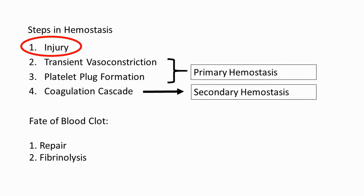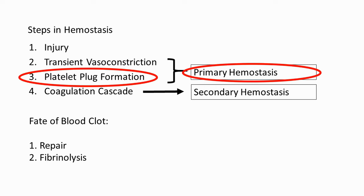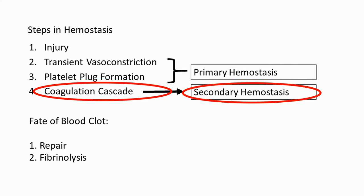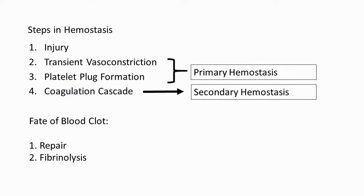It starts off with an injury to the blood vessel causing blood loss. A series of events then happen leading to the formation of the platelet plug, also called primary hemostasis. Once the platelet plug has been formed, the body makes it stronger through the coagulation cascade, also called secondary hemostasis. This forms the complete blood clot, marking the end of hemostasis.